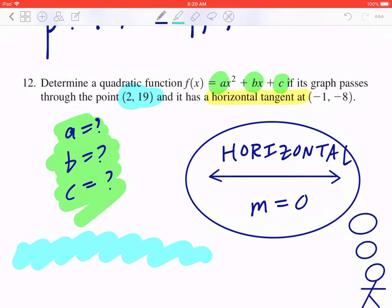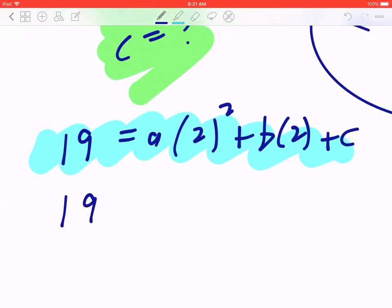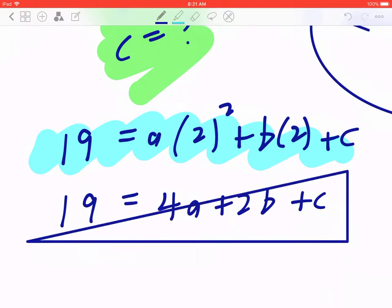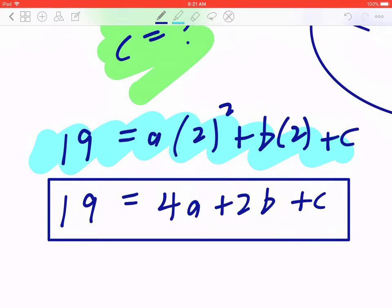This means you have to look at the function and plug in 2 for x and 19 for y. So 19 equals a times 2 squared plus b times 2 plus c. If you collect like terms, this will give you 19 equals 4a plus 2b plus c. Now, I'm going to put a box around this, and we can call this equation number 1.